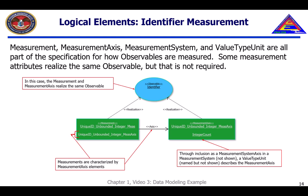Realization relationships indicate the semantic relationship between logical and conceptual elements. In this example, the logical level type of all identifier characteristics is a unique ID unbound integer measurement. The only access to this measurement happens to realize the same observable as the measurement, but as we will see in subsequent examples, the observables realized for the axis elements are not necessarily the same as the observable realized by the measurement itself. The examples shown in this video are simplified and exclude some of the depth of the measurement portion of the logical metamodel.